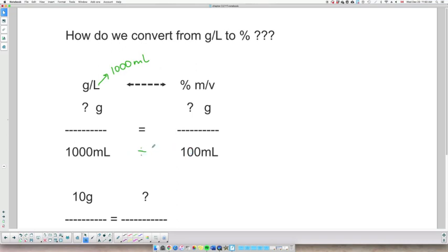So essentially, we're trying to go from 1000 mL to 100 mL at the denominator. How do we do this? Well, we would divide by 10, right? So if I divide my denominator by 10, logically, I have to divide the top part by 10 as well to be consistent. So that's more or less what I'm doing.